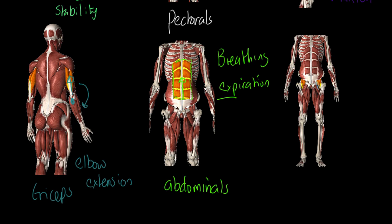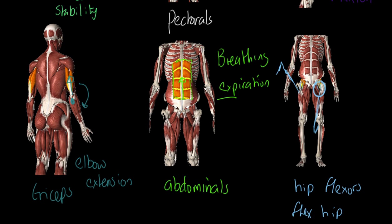These muscles here, there's a pair on either side, are called hip flexors. There are actually two muscles — one's called the iliacus and the other the psoas — but they're called hip flexors, so what do they do? They flex the hip. Flexion is the leg coming in front of the body, while extension is the leg going behind the body at the hip. So when your running leg goes in front of you, that's hip flexion; when you kick it back behind you, that's extension.